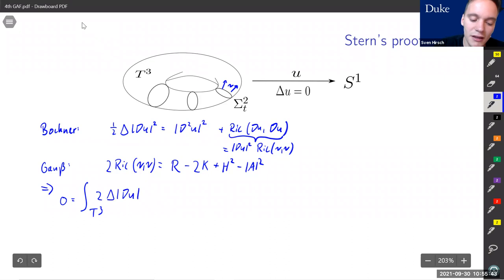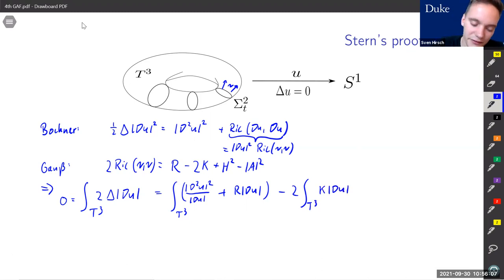We get that zero equals the integral over the torus of twice Laplacian norm gradient u, which equals the integral of the Hessian of u squared divided by the norm of the gradient of u plus the scalar curvature times norm gradient u, minus the Gaussian curvature terms.